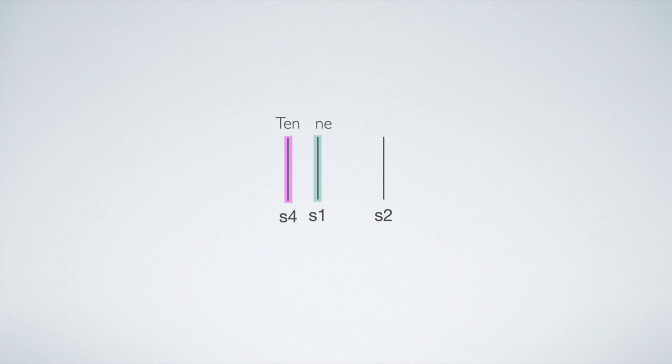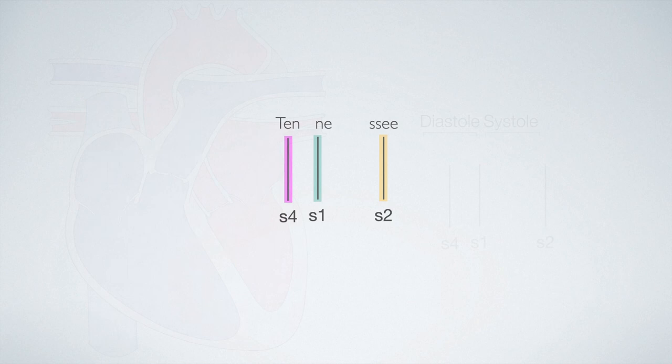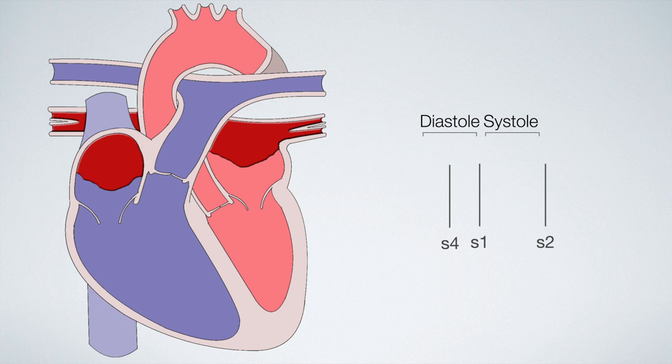Let's now take a closer look at why the fourth heart sound occurs. Now because the S4 heart sound occurs momentarily before S1, I have changed our graphical representation so that it now starts with diastole and ends with systole. Blood flows into the atria and ventricles during diastole and the fourth heart sound occurs when atrial contraction forces blood into abnormal non-compliant ventricles.